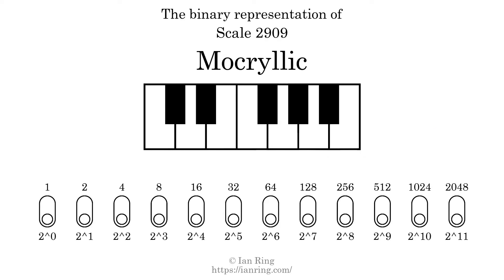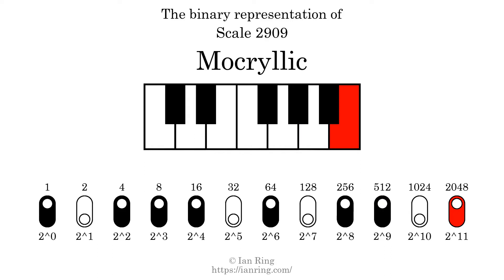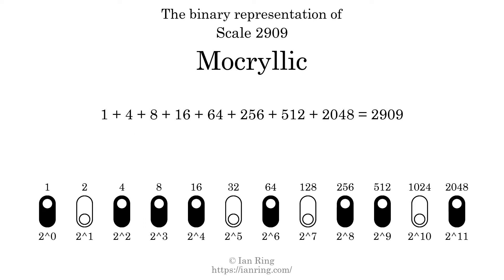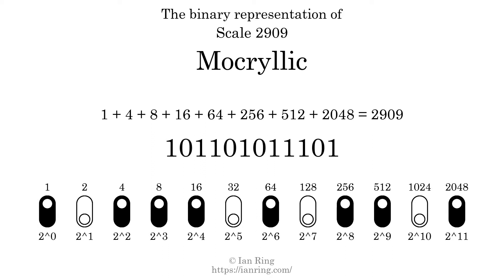The binary representation of this scale is determined by mapping tones of the scale to binary digits. Each binary digit represents a power of 2. To get the scale number, we add the powers of 2 together. The powers of 2 that are present in the scale, all added together, equals 2909. That is why the scale number, in decimal, is 2909. The scale number not only enumerates the scale with a unique index, but it also literally describes the tonal content of the scale. Represented as a binary number in base 2, the scale number is 101101011101.